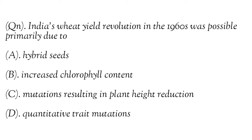Through the introduction of high yield crop varieties and application of modern agricultural techniques, it led to an increase in food production in India. The main development was higher yielding varieties of wheat which resulted in plant height reduction, developed by many scientists including American agronomist Dr. Norman Borlaug, Indian geneticist M. Swaminathan and others. They used the R.H.T. gene from Norin low for high reduction of plants. So the right option is C.